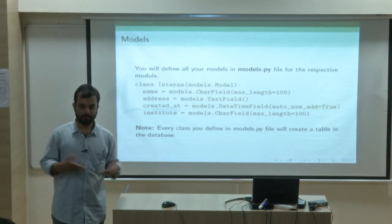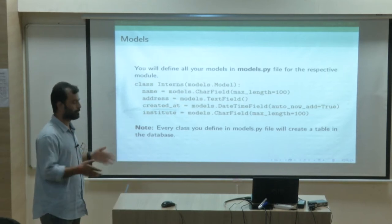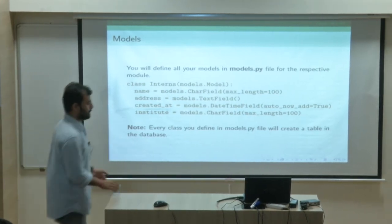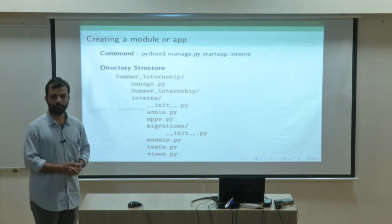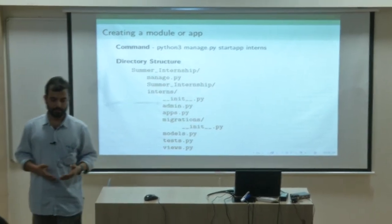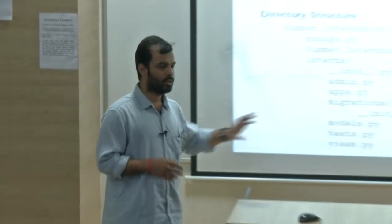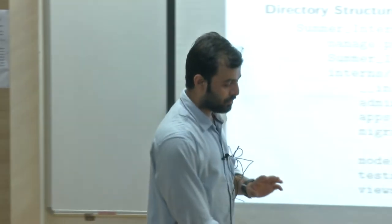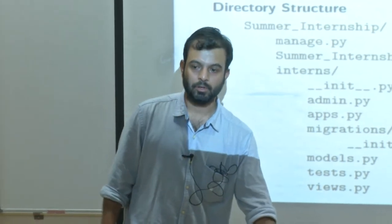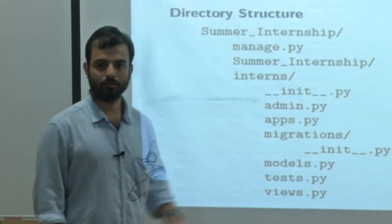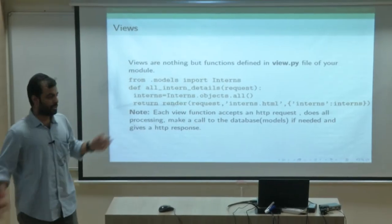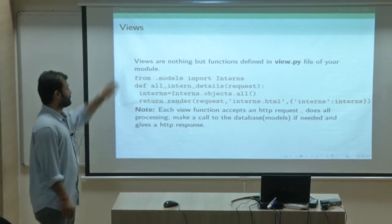For interns, we're taking four fields: name, address, created, and institute name. After creating your models, you do 'python3 manage.py makemigrations' so that Django can keep track of what fields you have created. In the migrations section, it tracks all the models. After that, you do 'python3 manage.py migrate', and that creates all the tables and fields in your database. When you work with models, you don't go to MySQL and change anything directly — all those changes are tracked in migration sections.